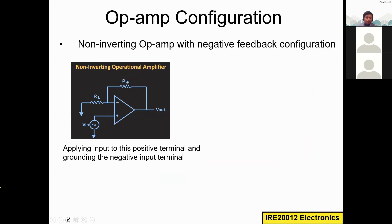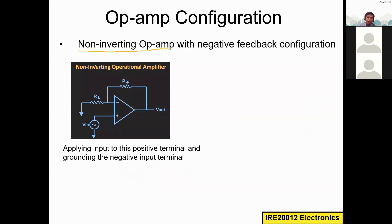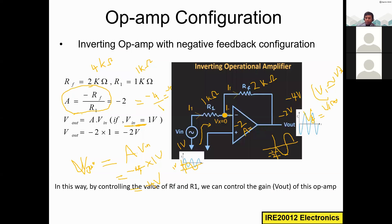This is the non-inverting operational amplifier. The previous one was the inverting operational amplifier. Here we are applying the input to the positive input terminal. The circuit is the same — observe the difference: instead of grounding the positive terminal, we are applying the input there, and instead of applying V1 to the negative terminal, we are grounding it. That is the only difference.